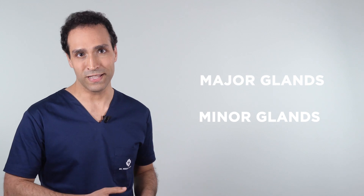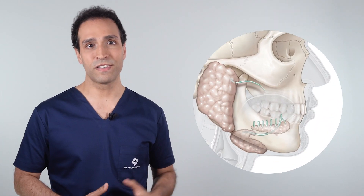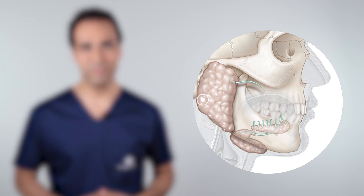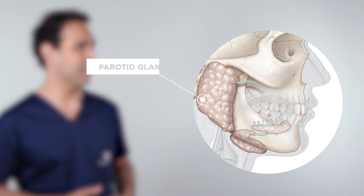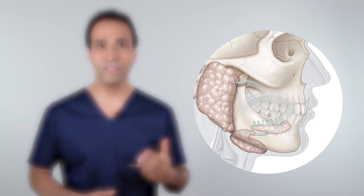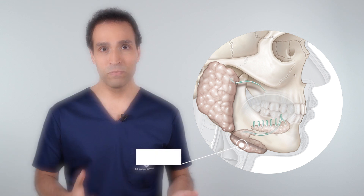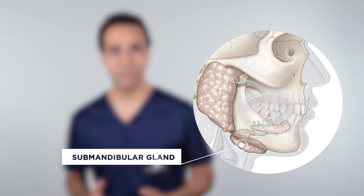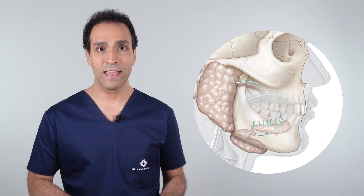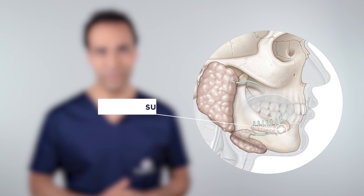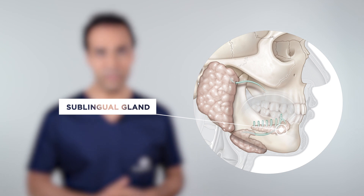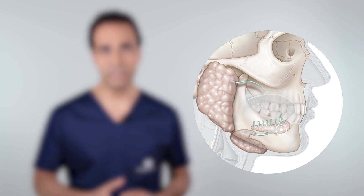Saliva is produced and secreted by the salivary glands, classified into major and minor glands. There are six major salivary glands, three on each side of the face. The largest are the parotid glands, located in front of the ears. The submandibular glands are the second largest and can be found beneath the floor of the mouth. Anteriorly to them lie the sublingual glands.